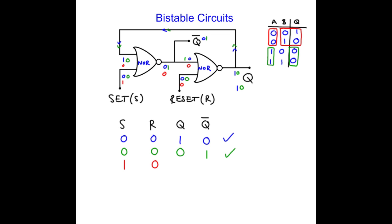So I get a 0 here. I've got a 0 from the reset. So that becomes 0. 0 and 0 give me 1, so that becomes 1. That 1 gets fed back around. So this one now changes.